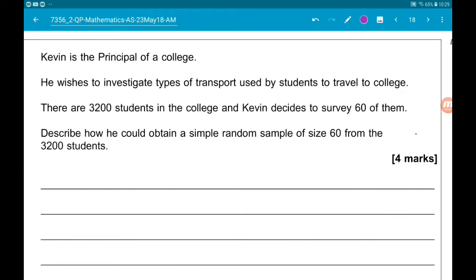There are 3,200 students in the college and Kevin decides to sample survey 60 of them. We want to describe how Kevin could carry out a simple random sample of 60 students out of the 3,200 students.